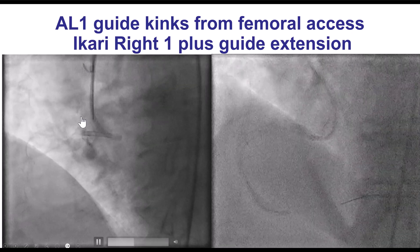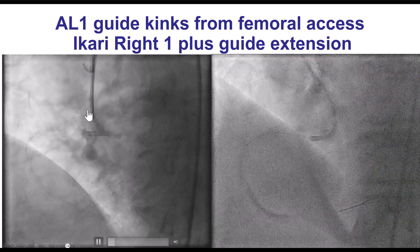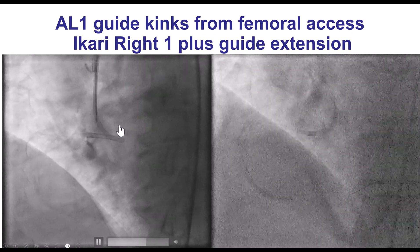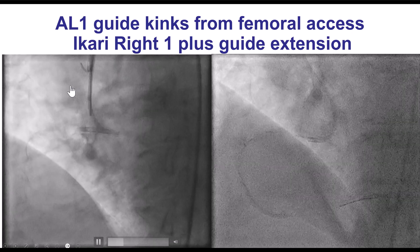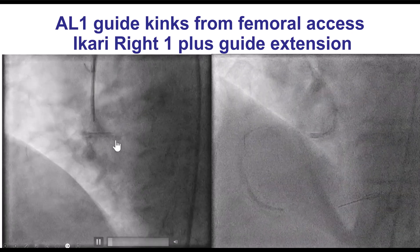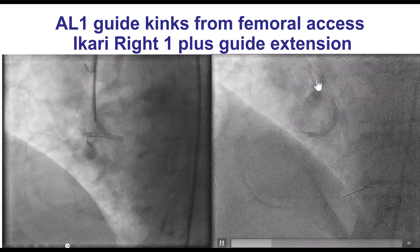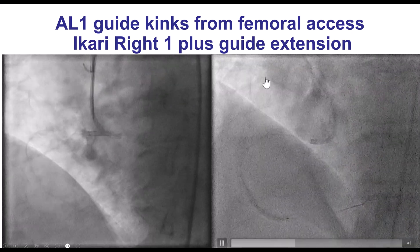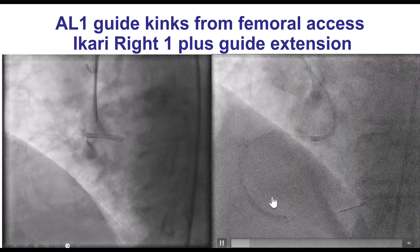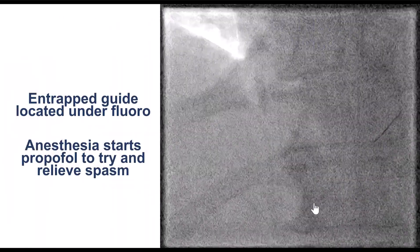We decided to proceed with PCI of the right coronary artery through the femoral axis while performing all these maneuvers for the radial. We tried an AL-1, but the guide catheter kinked. We eventually had to use an Ikari Right-1, which is a radial guide used through the femoral, to be able to engage the right coronary artery and predilate.